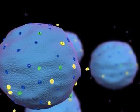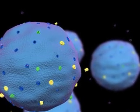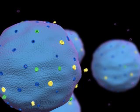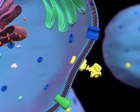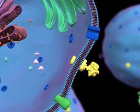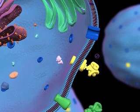Membranes regulate the movement of substances in and out of the cell through a wide range of mechanisms. In this case, receptors on the surface trigger signaling mechanisms involving other proteins in the cell's cytoplasm.